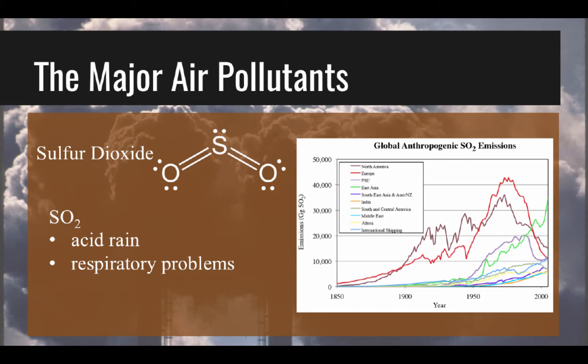Sulfur dioxide, or SO2, is a corrosive gas. Natural sources of sulfur dioxide include volcanic eruptions, decay of organic matter, and ocean sea spray. More than half of sulfur dioxide emissions are derived from human activities, especially combustion of fossil fuels for transportation prior to catalytic converters, and electricity generation. Respiratory damage and acid rain are two problems associated with sulfur dioxide.